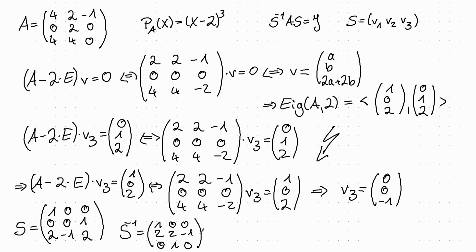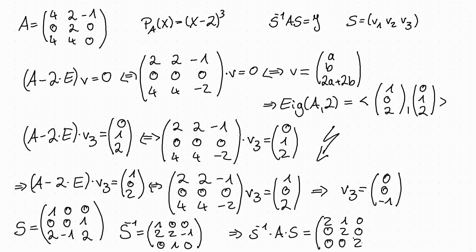Then we have that S inverse times A times S is in Jordan form. Since we started with the vectors belonging to the Jordan block of size 2, that block comes first, and then the last eigenvector corresponding to the Jordan block of size 1. In the next video we will see an example of a matrix with a Jordan normal form with two eigenvalues and two blocks.